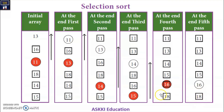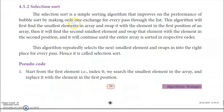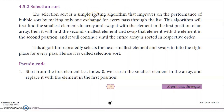This is how selection sort is done. Selection sort is a simple sort technique that improves on the performance of bubble sort by making only one exchange for every pass through the list. There may be many comparisons, but only one exchange will happen at the end of every pass.